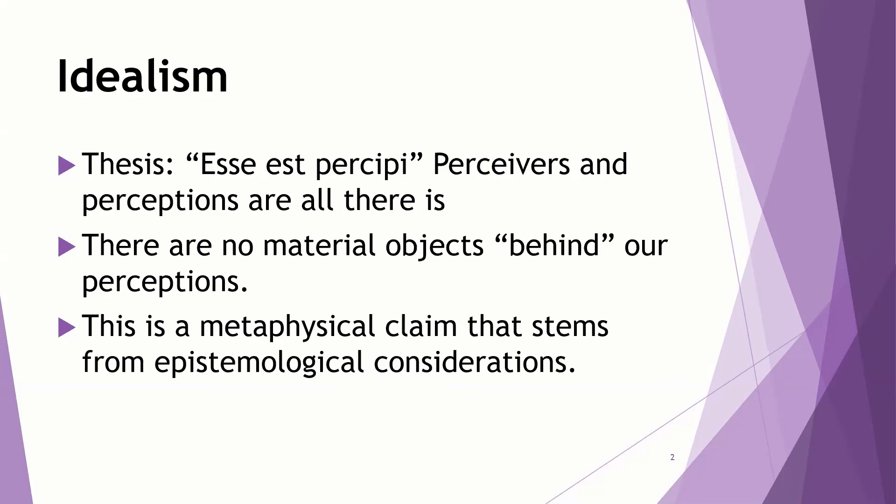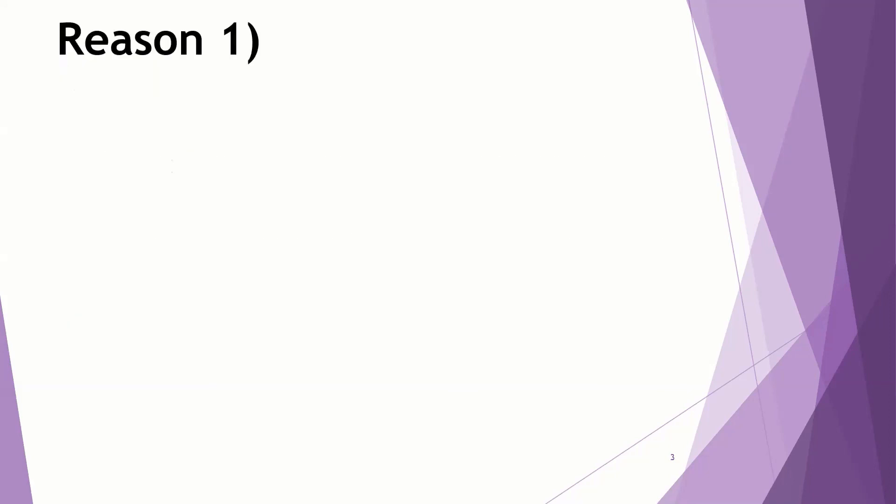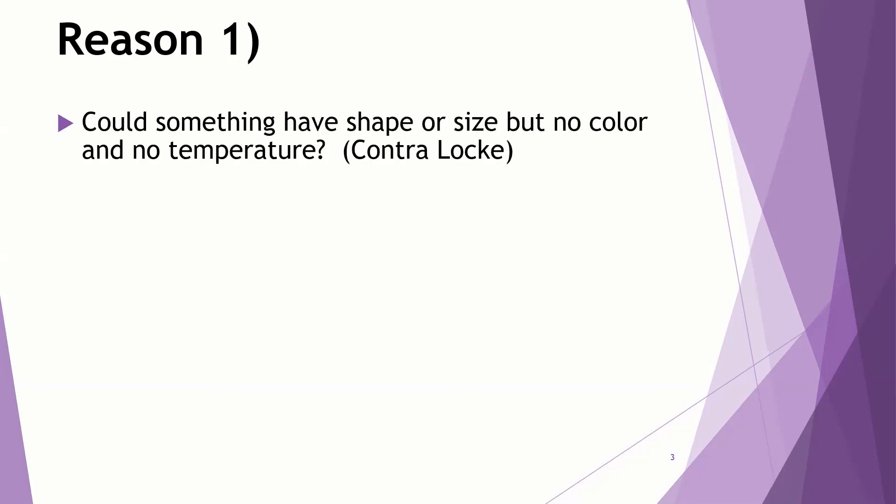Now, that is a metaphysical claim, but it stems from epistemological consideration. So we look at Berkeley in our context with a light of his epistemology. Now, why would somebody say this? Why would somebody say we don't have objects that cause the perceptions that are separate from us, that exist out there somewhere on their own, like it seems natural to believe? Well, Berkeley argues, well, first of all.